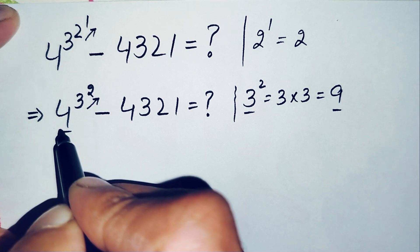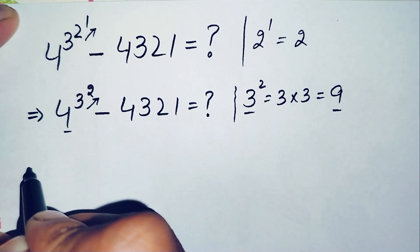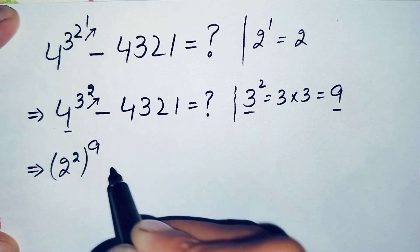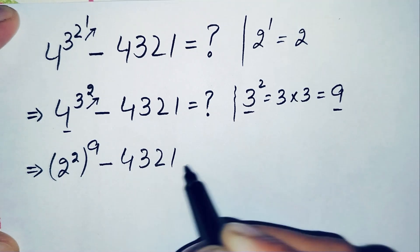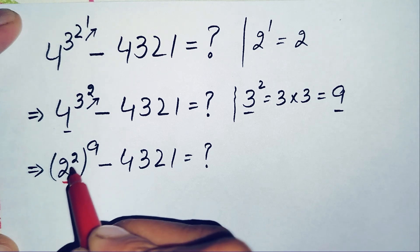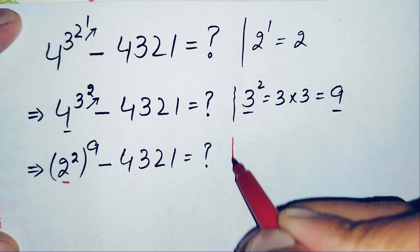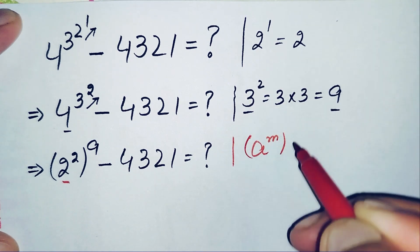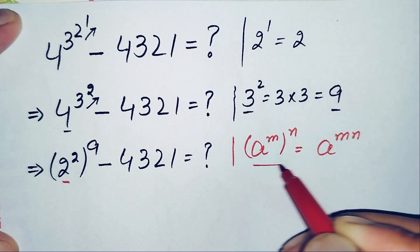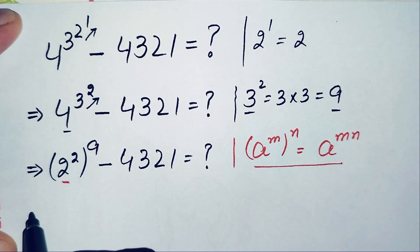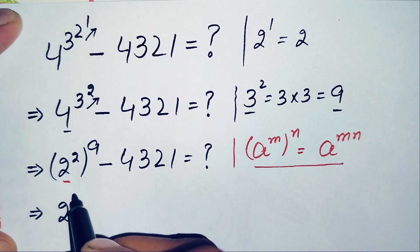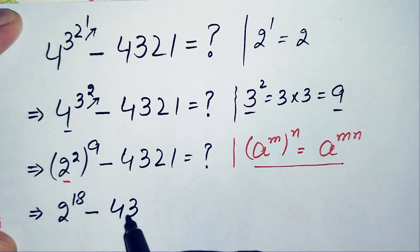We replace 3 raised to power 2 with 9, and rewrite the base 4 in exponential form as 2 squared. So this becomes: (2²) raised to power 9, minus 4321. Now we apply the exponential identity (r^m)^n = r^(m×n). Using this identity, we multiply the powers: 2 times 9 equals 18, giving us 2 raised to power 18, minus 4321.